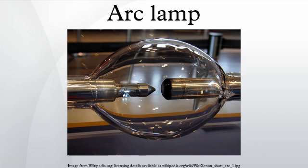An arc lamp or arc light is a lamp that produces light by an electric arc. The carbon arc light, which consists of an arc between carbon electrodes in air, was invented by Humphrey Davy in the early 1800s and was the first practical electric light.